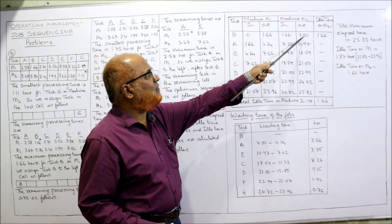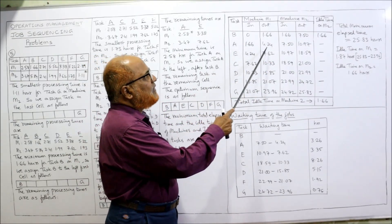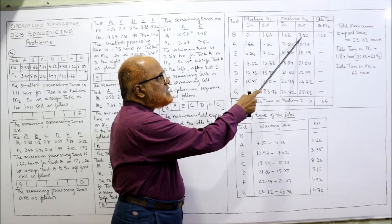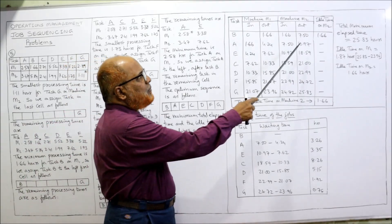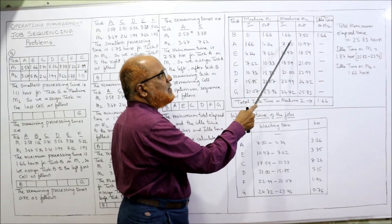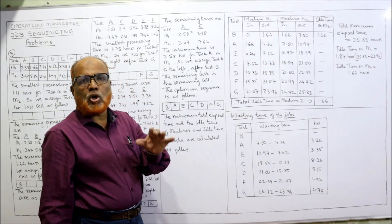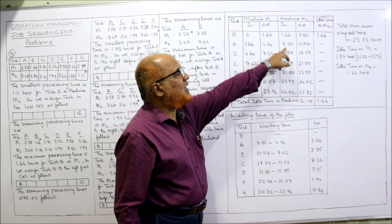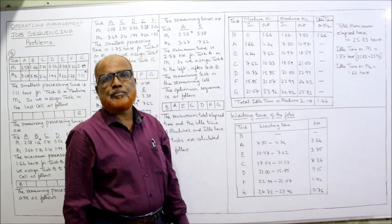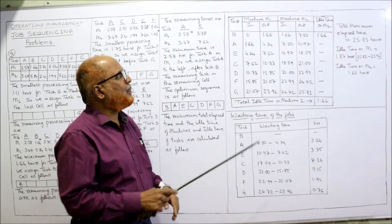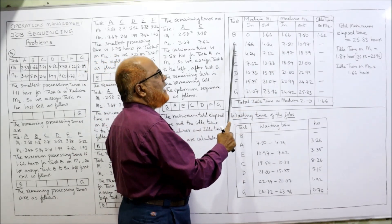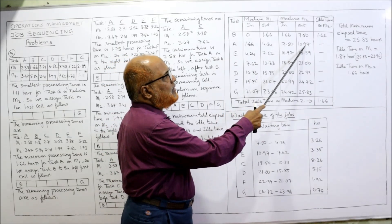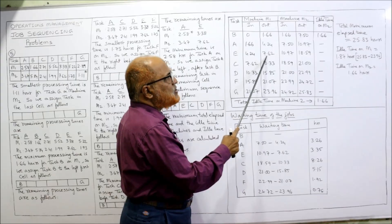Job A was completed on M1 at 4.24, but M2 cannot start at 4.24 because the previous job finishes on M2 at 7.50. Whichever is higher — 7.50 vs 4.24 — we take 7.50. Job A is waiting from 4.24 to 7.50. Task A on M2 is 3.47, so 7.50 + 3.47 = 10.97.